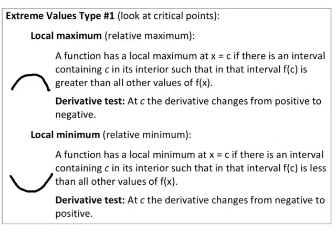We're going to be talking about extreme values. This is the first type where we'll talk about local minimum and local maximum. Later on we'll talk about absolute minimum and absolute maximum, but the first type of extrema — which is the plural for the minimums and maximums — will be local max.